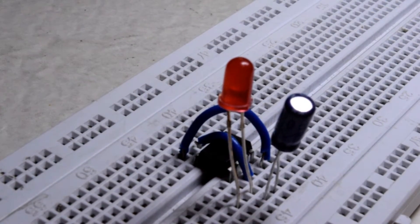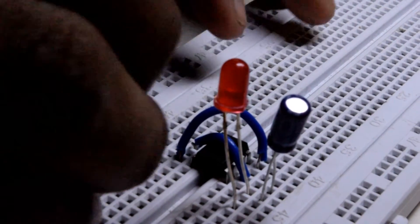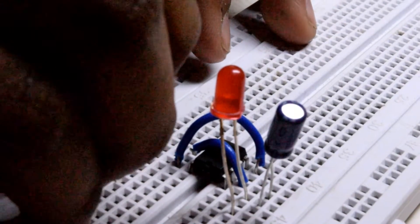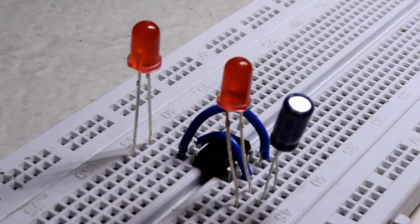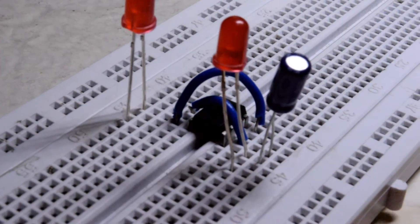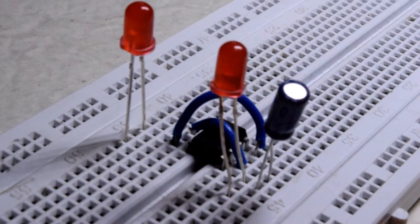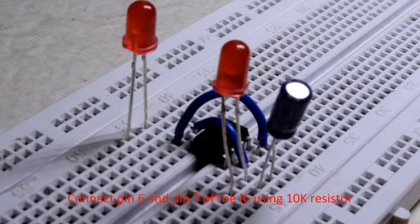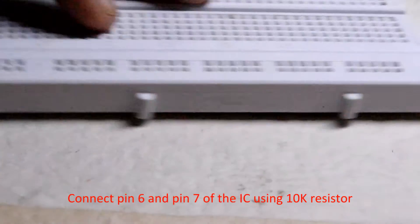Connect pin 6 and pin 7 of the IC using a 10k resistor.